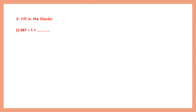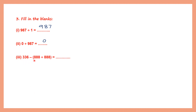Question 3, fill in the blanks. First: 987 divided by 1 — any number divided by 1 gives the same number, so the answer is 987. Next: 0 divided by 987 — 0 divided by any non-zero whole number is 0, so the answer is 0. Next: 336 minus (888 divided by 800) — we work out the bracket first; any number divided by itself gives 1, so 336 minus 1 equals 335.